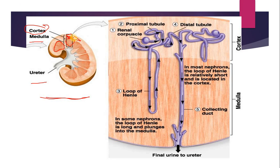The nephrons are present both in the cortex and medulla region, inside the renal pyramid. This is the renal corpuscle or glomerulus — it is present in the cortex portion. The PCT, which stands for proximal convoluted tubule, is also present in the cortex. The distal tubule, or distal convoluted tubule, is also called DCT.